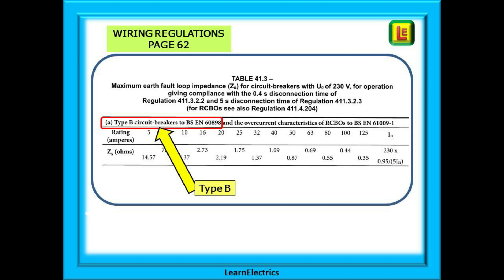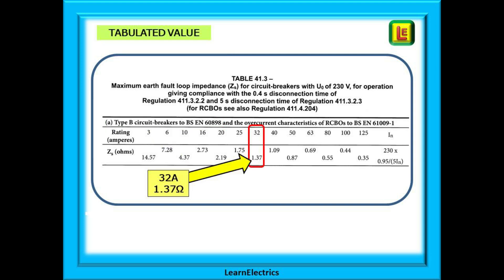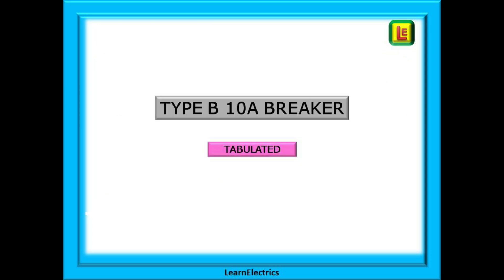But don't take my word for it — let's visit the regs book and check. Go to page 62 in the wiring regulations and find table 41.3. Near the top of the table we can find the row that says type B circuit breakers. Look through this table and we will find an entry for a 32 amp breaker, and below it is the ZS value of 1.37 ohms.